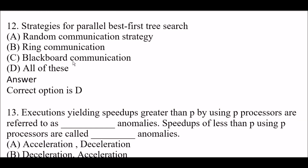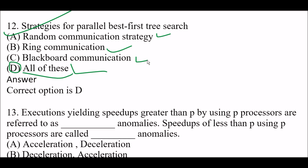Next question: What are the strategies for parallel best-first search? Option A: Random communication strategy. Option B: Ring communication. Option C: Blackboard communication. Option D: All of these. The right answer is Option D — all of these. Strategies for parallel best-first search include random communication strategy, ring communication, and blackboard communication.